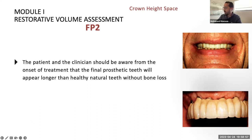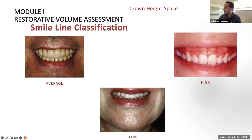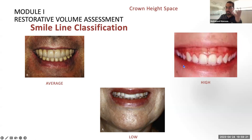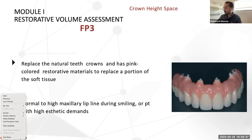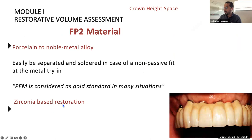Smile line classification — low, average, or high — is also critical. The low smile line is the most forgiving and the high smile line is the most challenging. If the gums are displayed when the patient smiles, you're dealing with a very challenging aesthetic case requiring meticulous prosthetic planning. With a low smile line, there is more flexibility. Materials for FP1 and FP2 include porcelain fused to metal or zirconia-based restorations, with staining options available for zirconia.